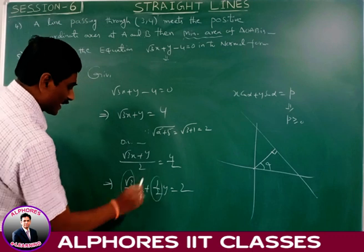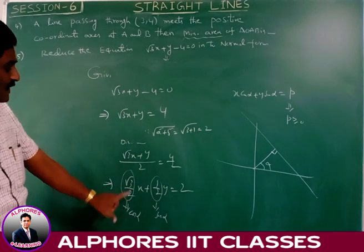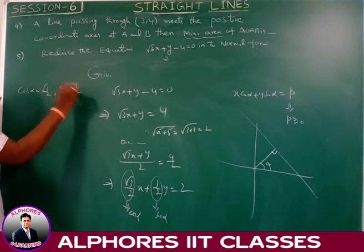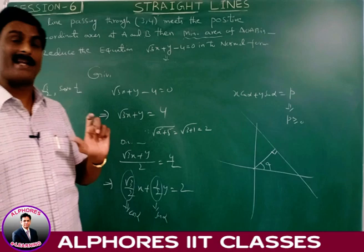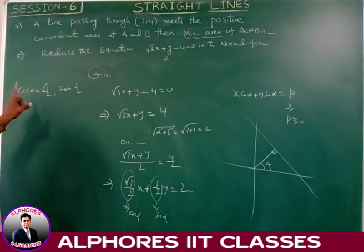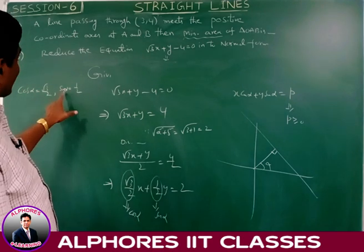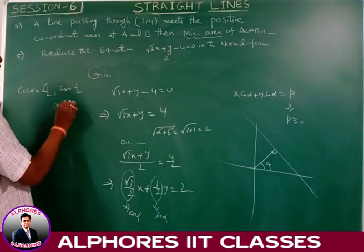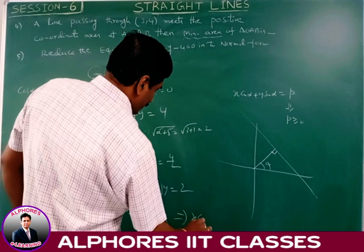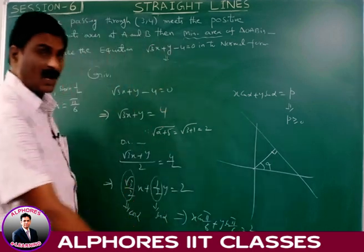After dividing by 2, we get (√3/2)x plus (1/2)y equals 2, which is in the form x·cos α plus y·sin α equals P. Here cos α equals √3/2 and sin α equals 1/2, both positive, so α lies in the first quadrant. Since cos 30° equals √3/2, we have α equals 30° equals π/6 radians. Therefore the normal form is x·cos(π/6) plus y·sin(π/6) equals 2.